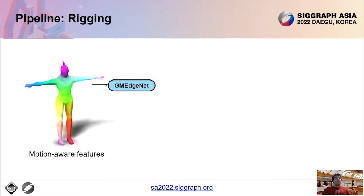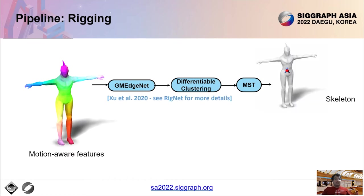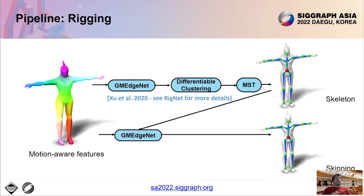More specifically, the mesh geometry and the motion-aware features are processed through a graph convolutional network and differentiable clustering to extract skeletal joints, which are then connected through a minimum spanning tree algorithm that outputs the final skeleton. The pipeline for skeleton extraction here follows RigNet, with the main difference being the use of motion-aware features as input, instead of relying on static geometry alone. The skeleton and motion-aware features are also processed by another graph convolutional network that outputs skinning weights. For more details about skeleton extraction and skinning, please see our paper and RigNet.